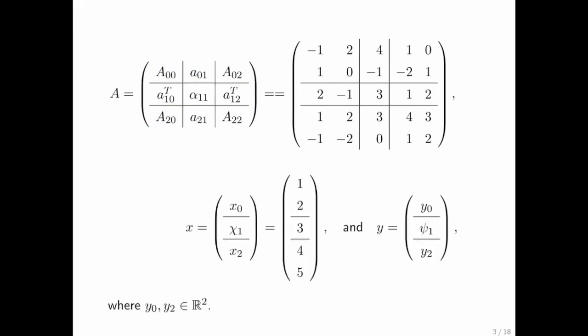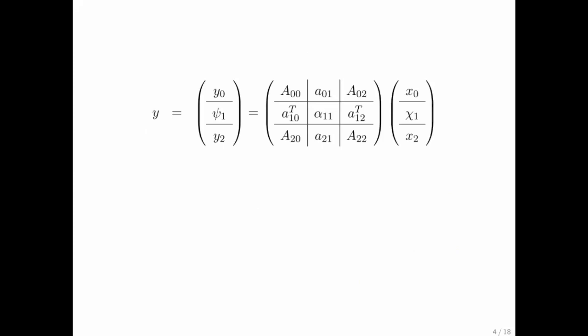Similarly, we can go and partition a vector x. And here we're partitioning it into a subvector that's the first two elements, a scalar that's the middle element, and a subvector that's the rest of the elements. And we're going to look at y is equal to A times x, and we're going to partition our vector y similarly. Let's look at what we will call a partitioned matrix vector multiplication.